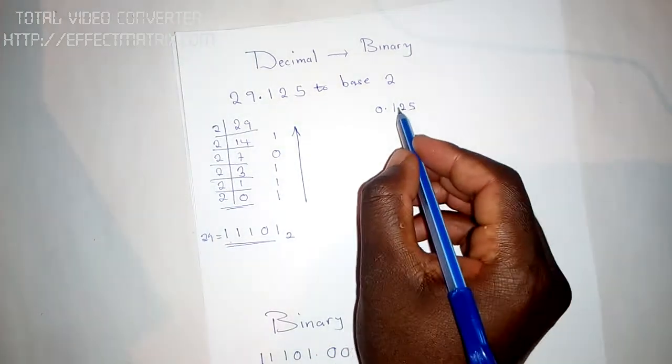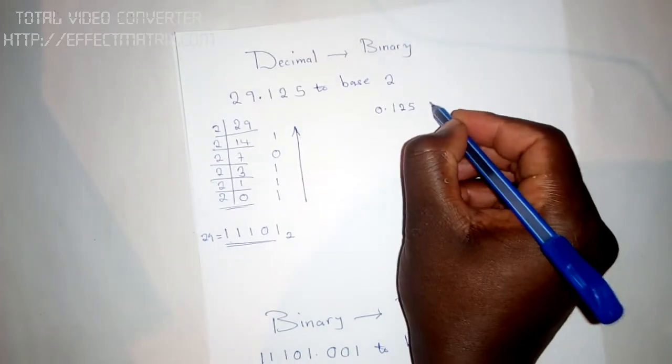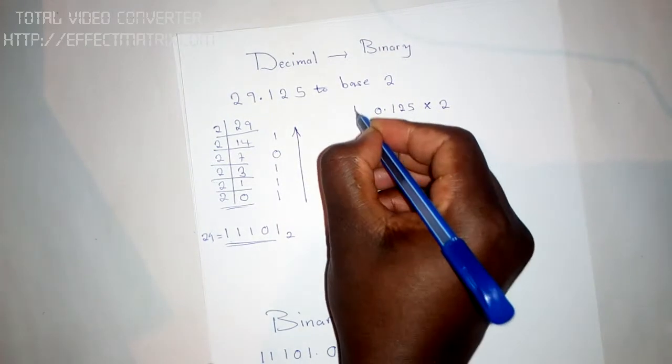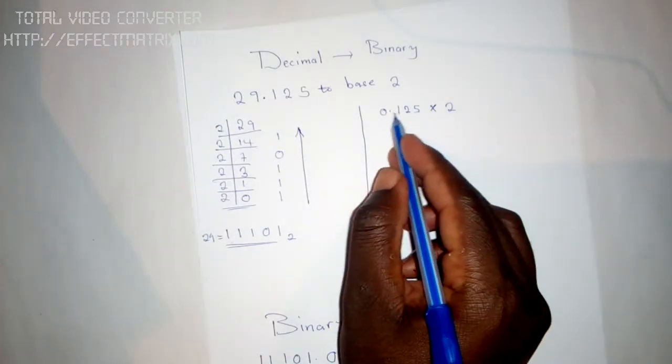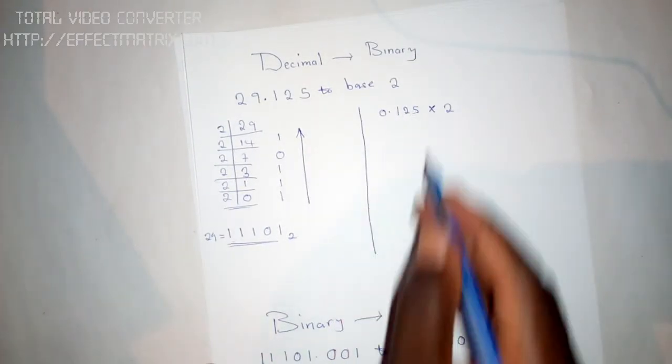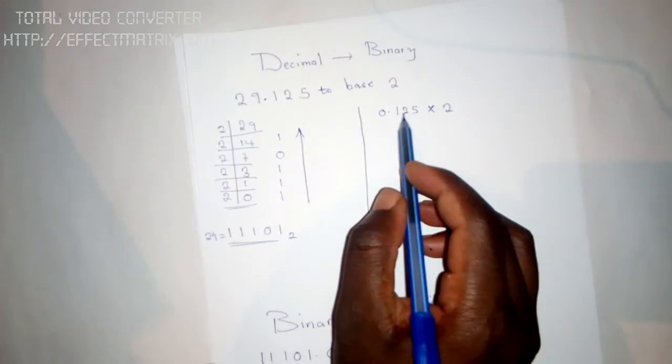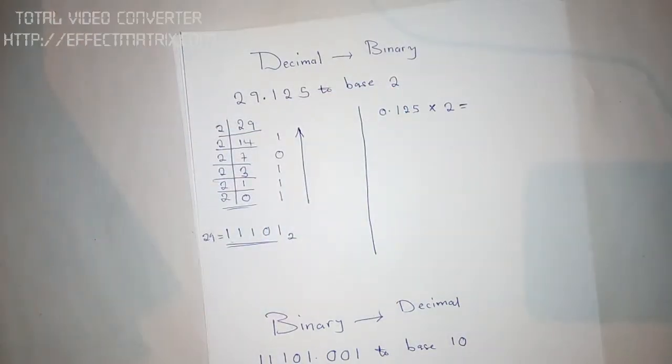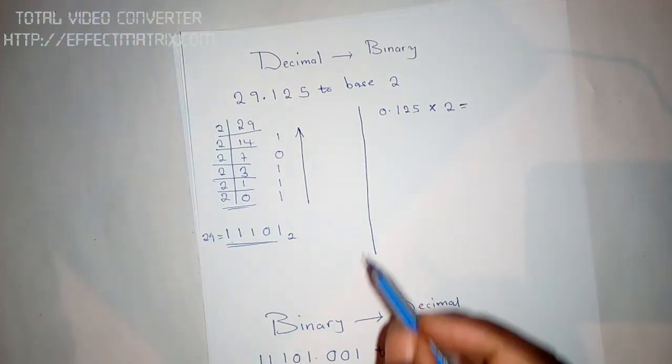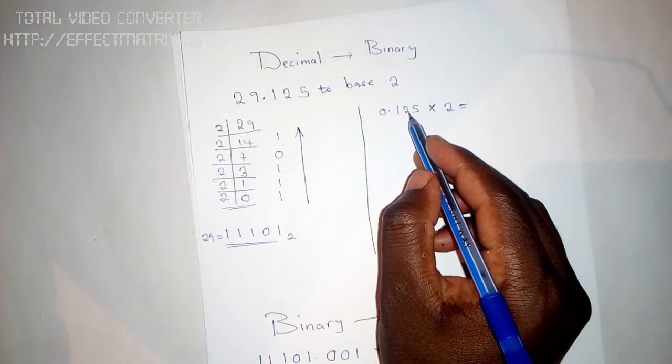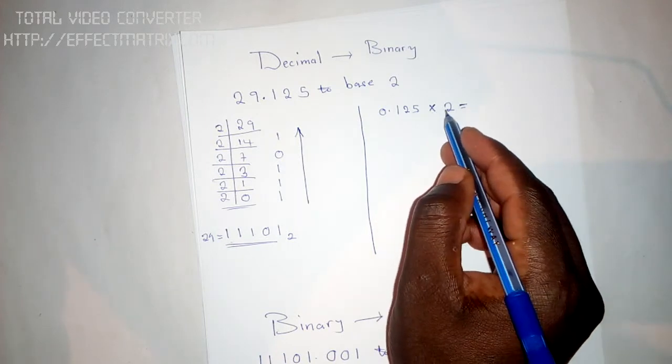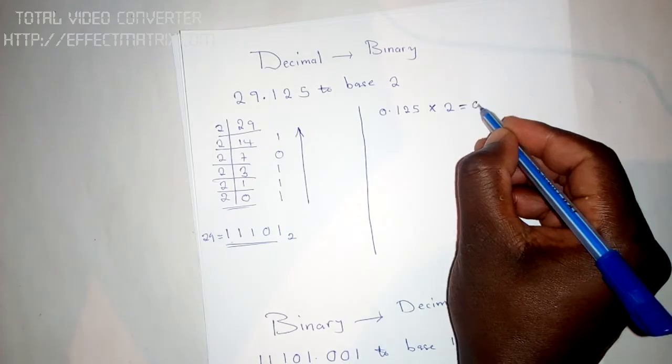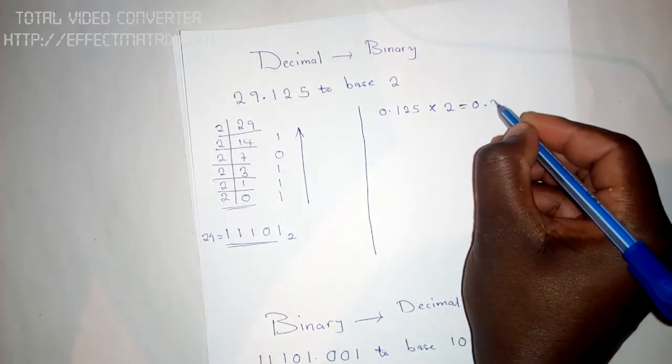Then you come to this one. For this one, you start doing multiplication. When there is a decimal point, you start multiplying. Here we were dividing, but for the decimal you start multiplying. So 0.125 by 2, the answer is 0.250.